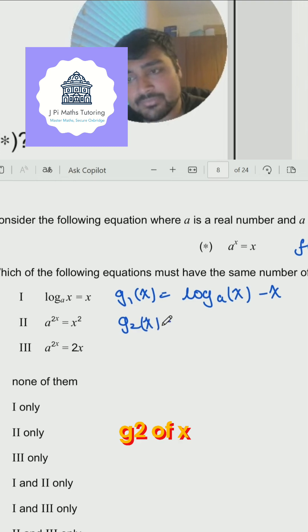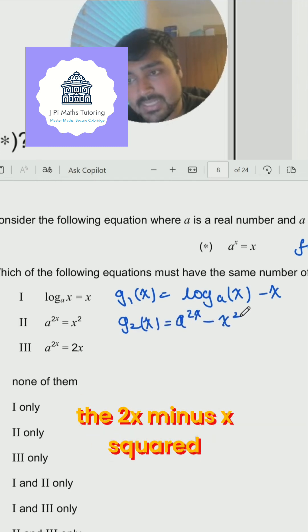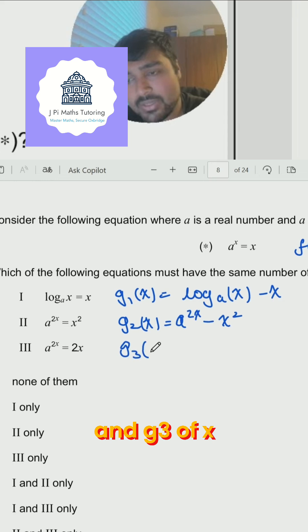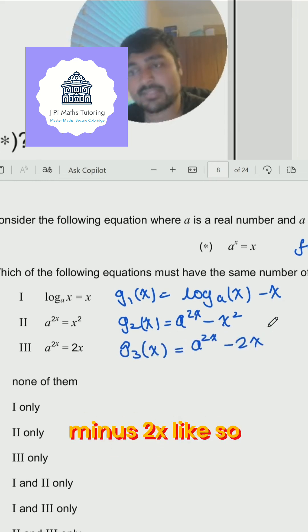g2 of x, which is a to the 2x minus x squared. And g3 of x is going to be a to the 2x minus 2x, like so.